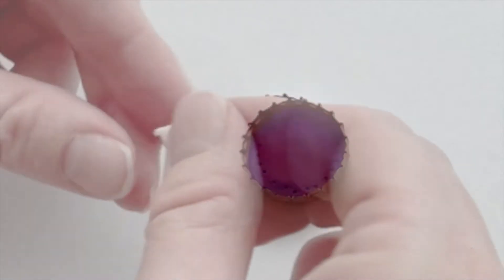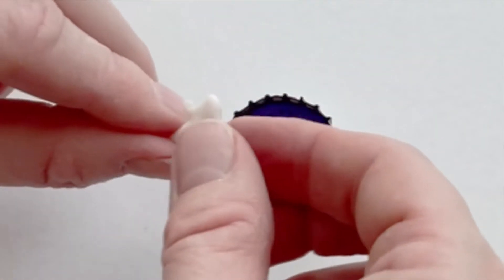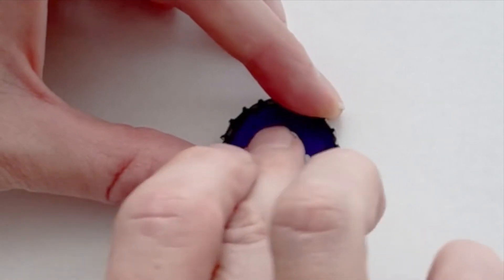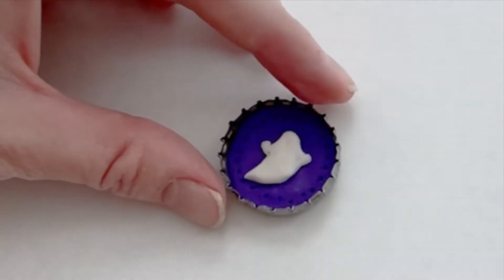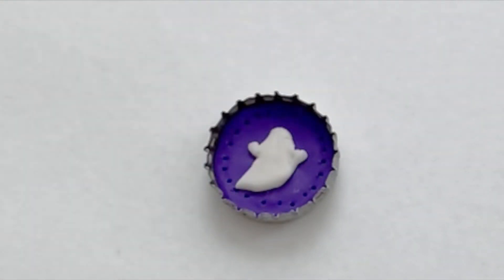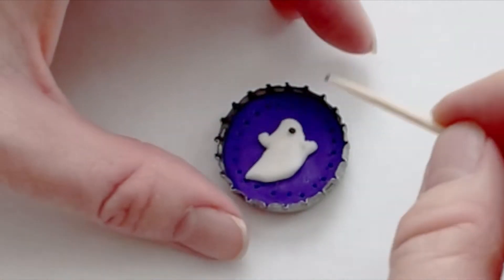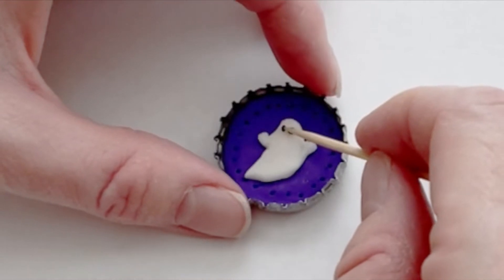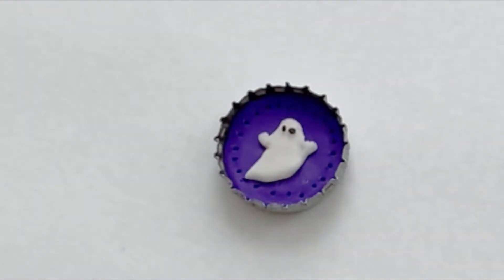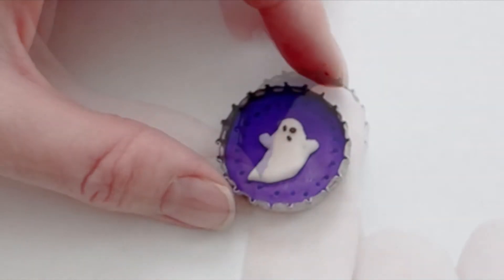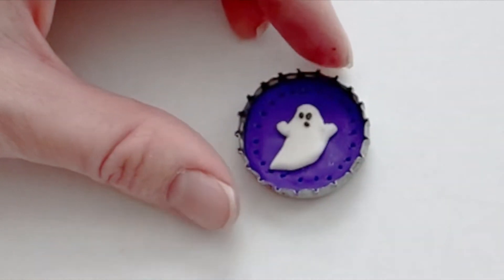Now form a ghost out of a tiny piece of white clay and press it securely into the background. Take the tiniest bits of black clay that you can get and roll them into tiny balls and set them in the ghost for two eyes and a mouth. A toothpick will be helpful to do this. Press them in a little with your finger.